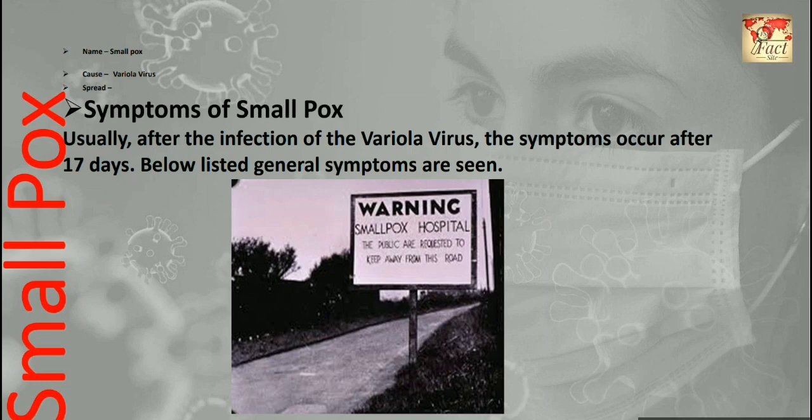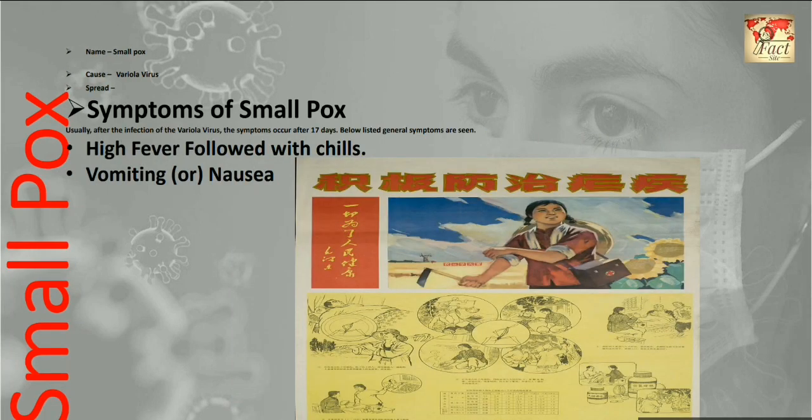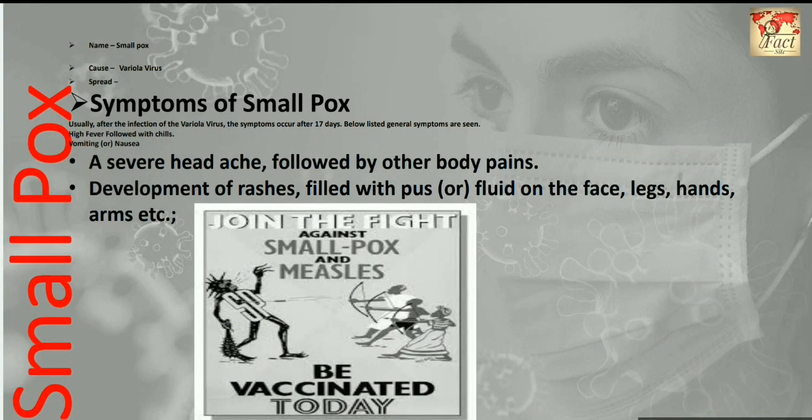Now let's discuss about the symptoms of smallpox. Usually after infection with the Variola virus, symptoms occur after 17 days. The general symptoms seen are: number one, high fever followed with chills; second, vomiting or nausea; third, a severe headache followed by other body pains; fourth, development of rashes filled with pus or fluid on the face, legs, hands, and other areas of the body.